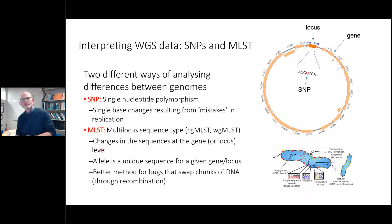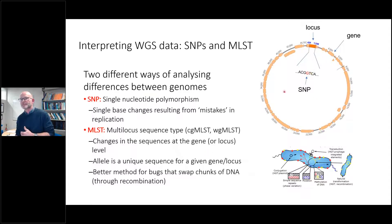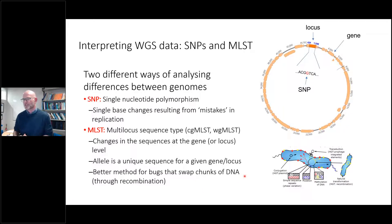Then we have allele-based multi-locus sequence typing. You'll often see the term cgMLST, which stands for core genome MLST, and whole genome MLST. These are changes in sequence at the gene or locus level. An allele is a unique sequence for a given gene — you assign different alleles based on the whole sequence. Two isolates might be a single allele difference apart, but that locus itself may have multiple SNPs. So SNPs tend to have more differences than alleles. This method is better for bacteria that tend to swap large chunks of DNA through recombination.